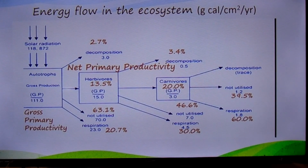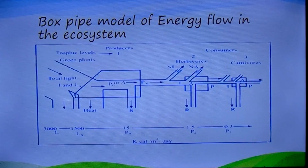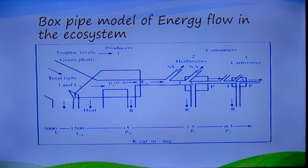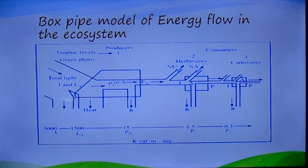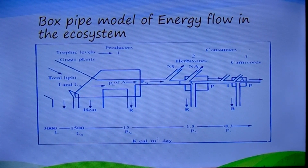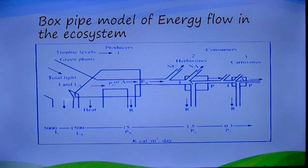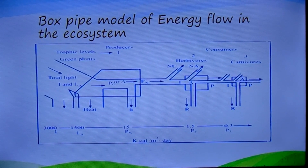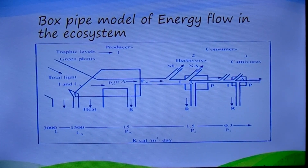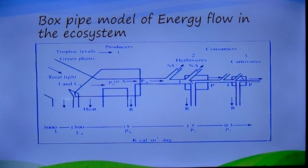Due to this one-way flow of energy, the system would collapse if the sun — the primary and ultimate source of energy — were cut off. Secondly, there is a progressive decrease in energy at each trophic level. This is largely accounted for by the energy dissipated as heat in metabolic activities, measured as respiration, coupled with unutilized and unavailable energy.